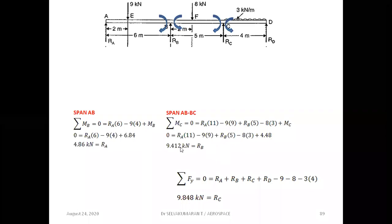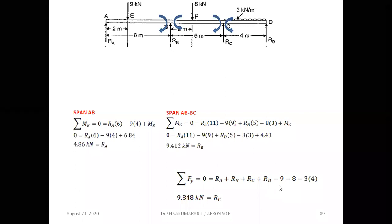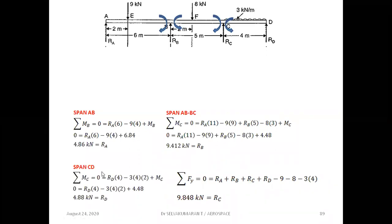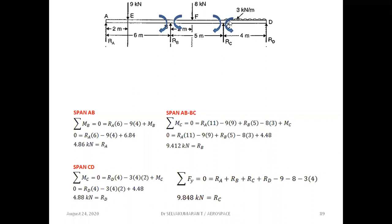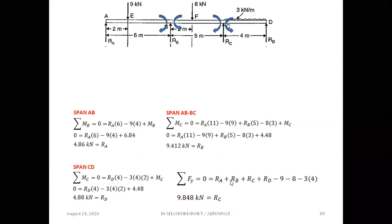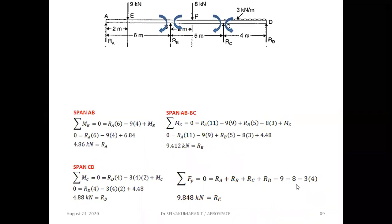After simplification, RB = 9.412 kN. From equilibrium ΣFy = 0: RA + RB + RC + RD = 9 + 8 + 3×4, giving RC = 9.848 kN. For span CD, taking moments about C: RD×4 − 3×4×2 + MC = 0, giving RD. Then using ΣFy = 0 for the full beam — RA + RB + RC + RD − 9 − 8 − 3×4 = 0 — all support reactions RA, RB, RC, RD are obtained.